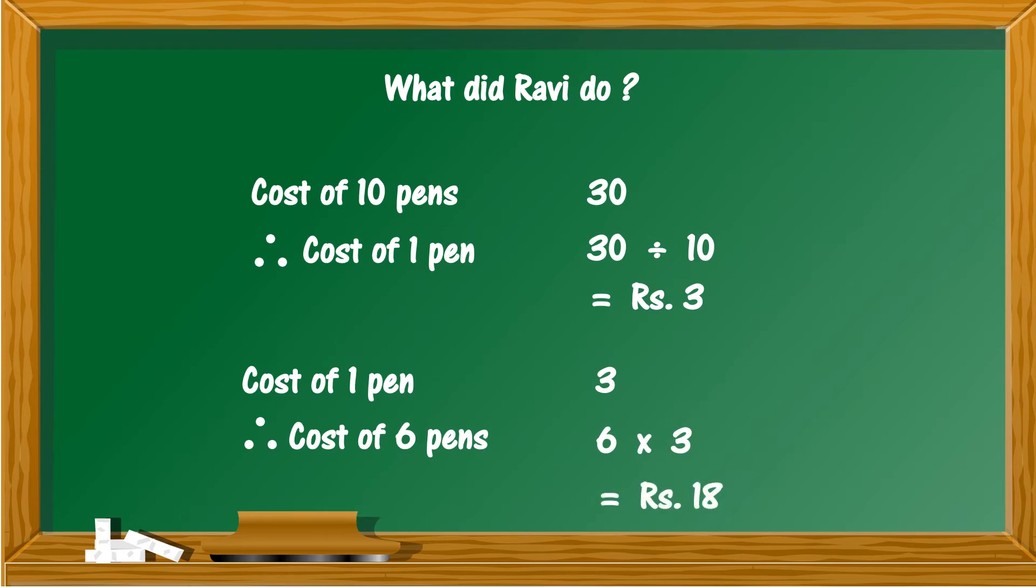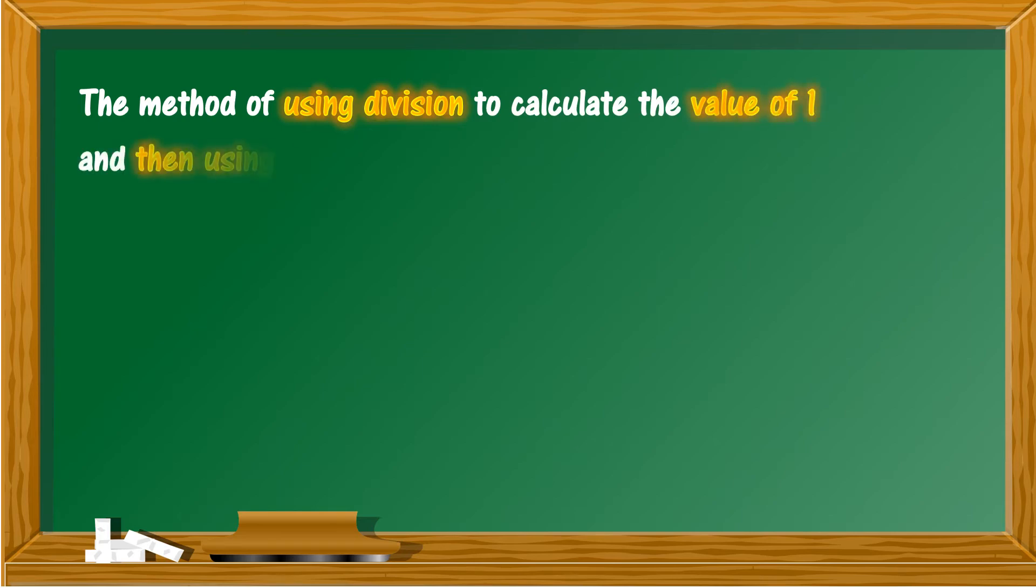His problem solved, Ravi happily kept rupees 18 on the counter and returned home. This method of using division to calculate the value of one quantity and then using multiplication to calculate the value of more than one quantity is called unitary method.